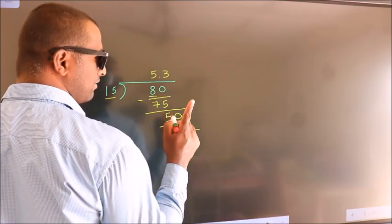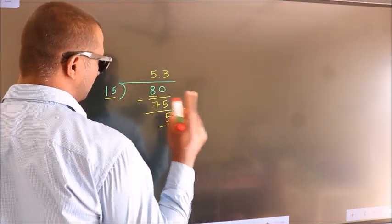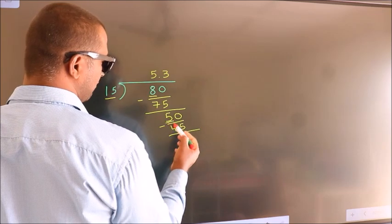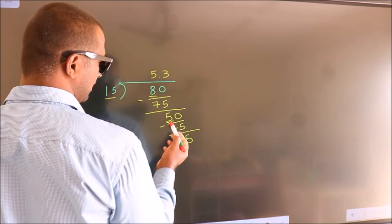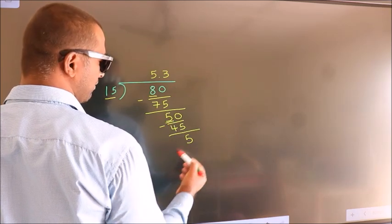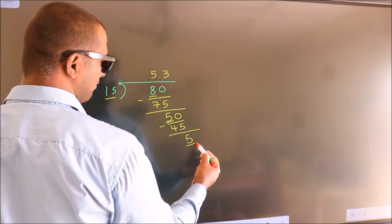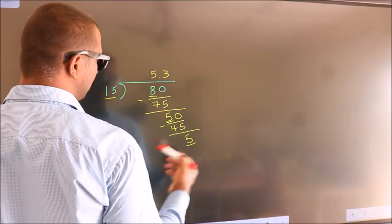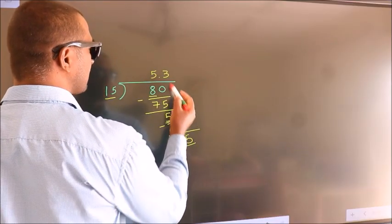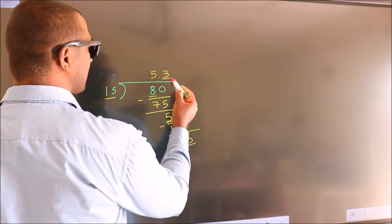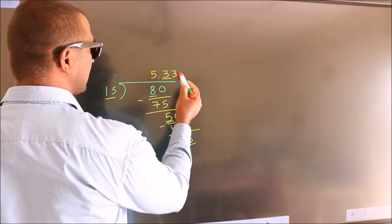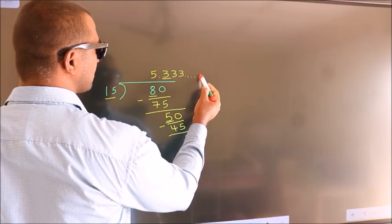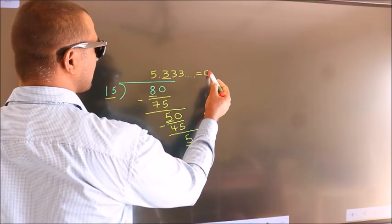Now, you observe — here we had 5 and we got 5 again. That means this number keeps on repeating. So this is our quotient.